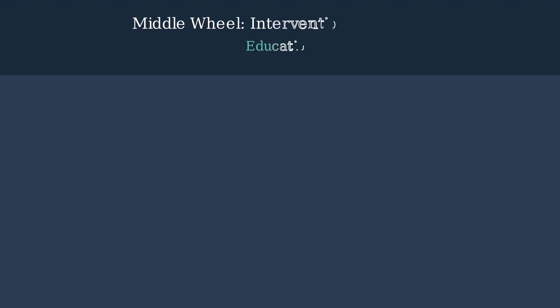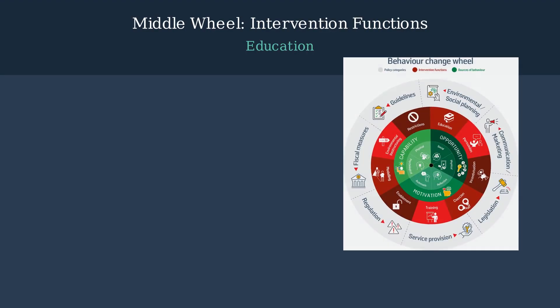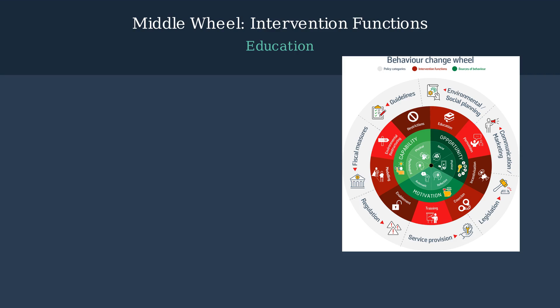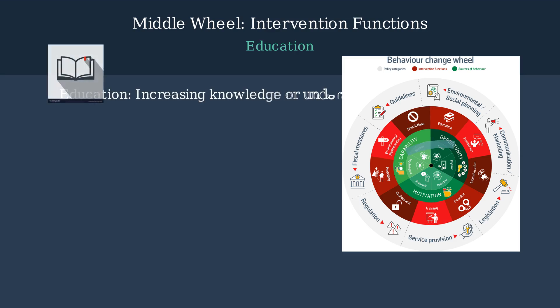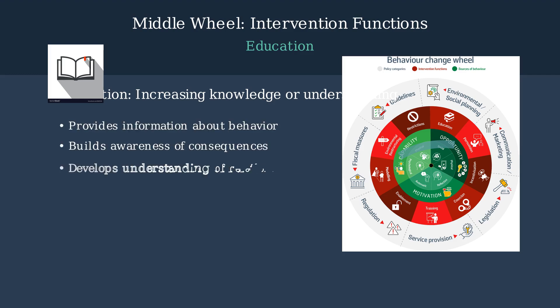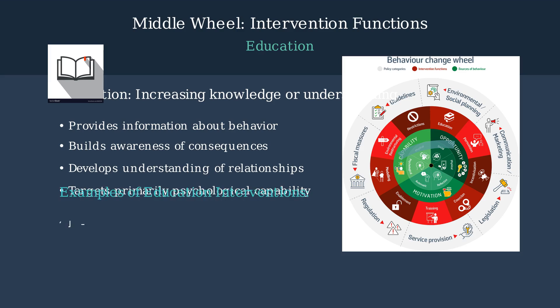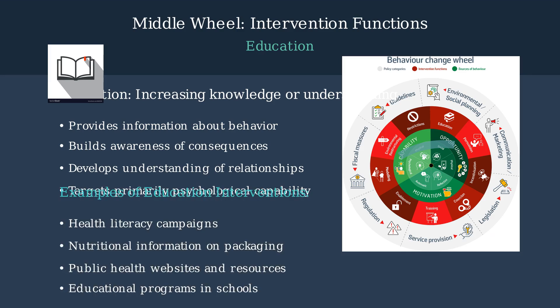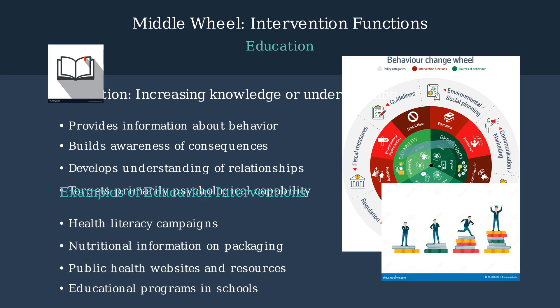The middle wheel of the behavior change wheel contains nine intervention functions. Let's focus on the first one: education. Education involves increasing knowledge or understanding through the provision of information about behavior and its consequences. There are various ways to implement education interventions in public health. Education primarily addresses psychological capability in the COM-B model, as it builds the knowledge needed for behavior change.